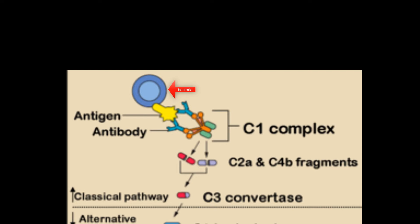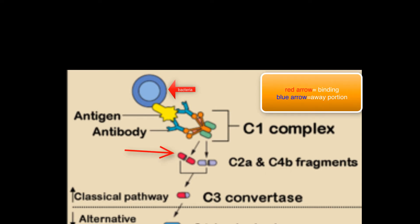Once C1 has been bound, another protein called C4 will now be cleaved by C1 into two parts: a B part and an A part. B is for binding, A is for away — so the A part goes away, while B will continuously bind to the complement pathway.